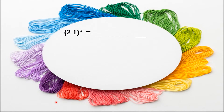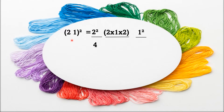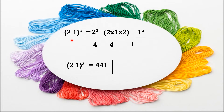Children, let me repeat the same method with one more example. For 21 squared, the first number is the first digit squared, that is 2 squared. The last number is the last digit squared, that is 1 squared. And the middle part is multiplying all these numbers: 2 into 1 into 2. So 2 squared is 4, 2 into 1 into 2 is 4, and 1 squared is 1. So our final answer is 21 squared equals 441.